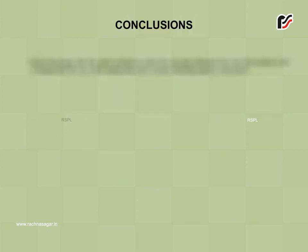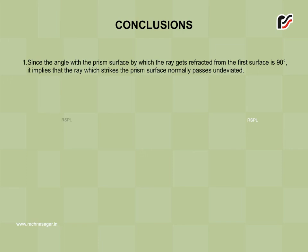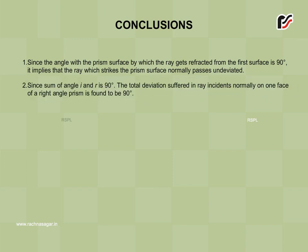Conclusions: Since the angle with the prism surface by which the ray gets refracted from the first surface is 90 degree, it implies that the ray which strikes the prism surface normally passes undeviated. Since sum of angle I and R is 90 degree, the total deviation suffered in ray incidents normally on one face of a right angle prism is found to be 90 degree.